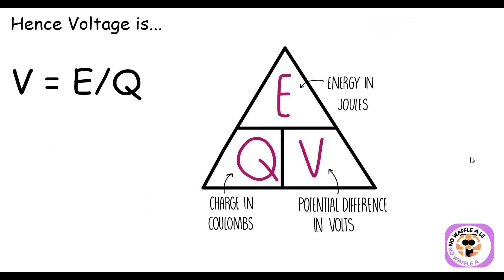Hence voltage gets its equation: one volt is equivalent to one joule of energy per coulomb of charge. When we talk about a coulomb of charge, that just means a certain number of electrons.